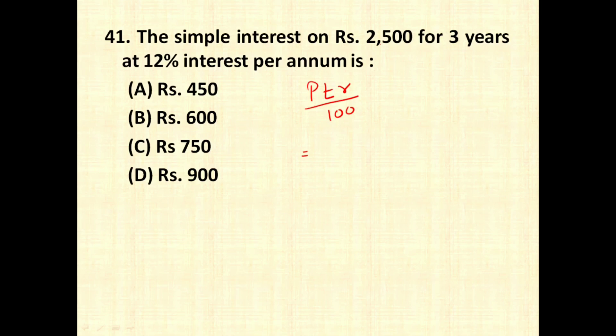So in this case, principal amount is 2500. T stands for time, time in this case is 3 years and R stands for rate of interest, which is 12 divided by 100. So 00 gets cancelled. 25 into 3 is 75 and 75 into 12 is 900. So option D, 900 is the correct answer for this question.